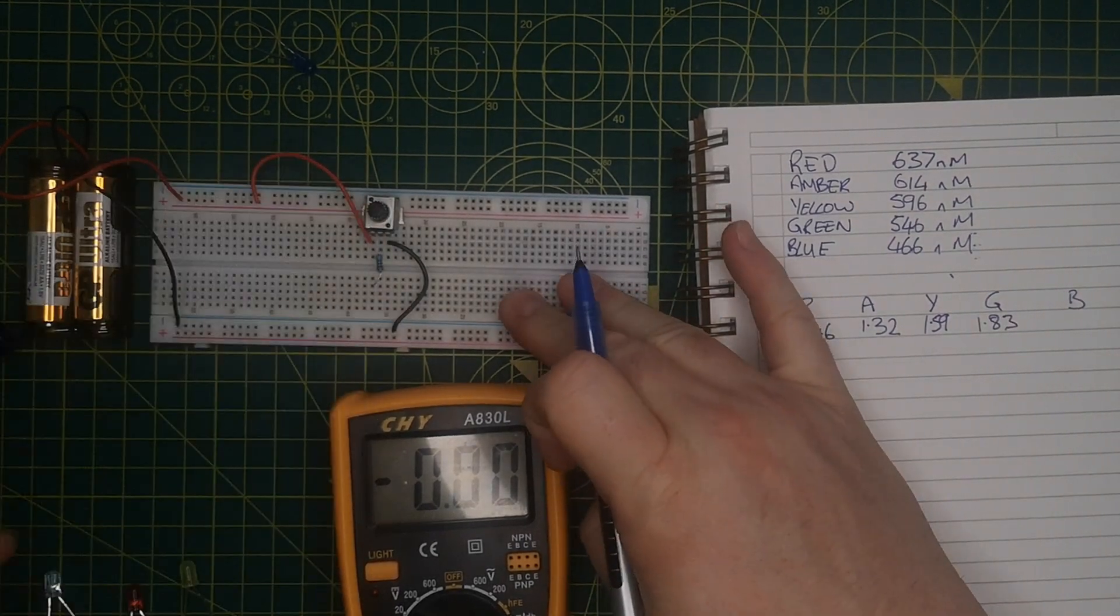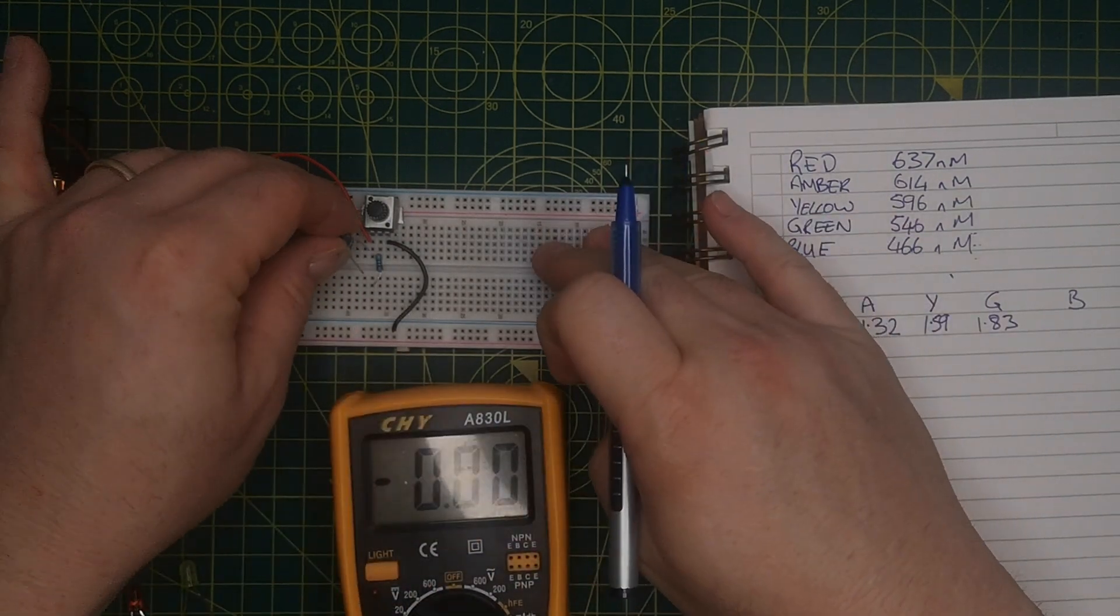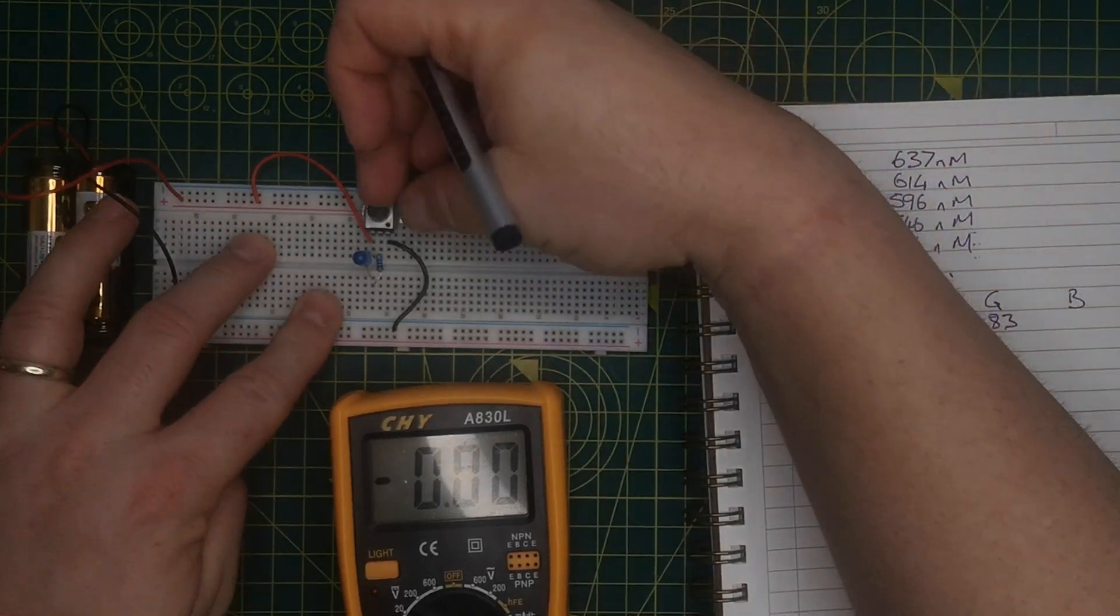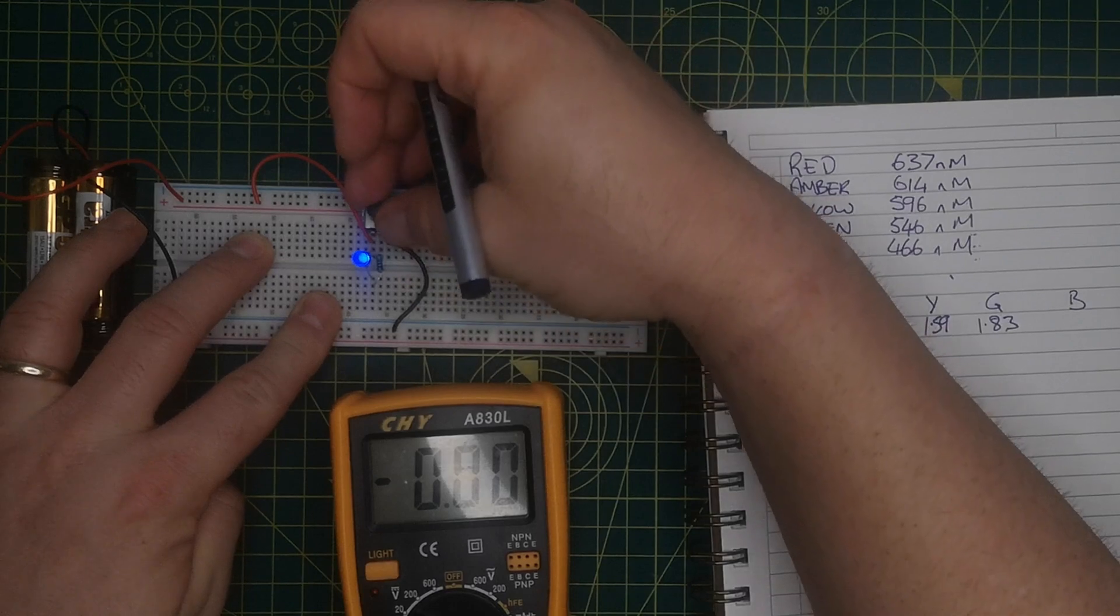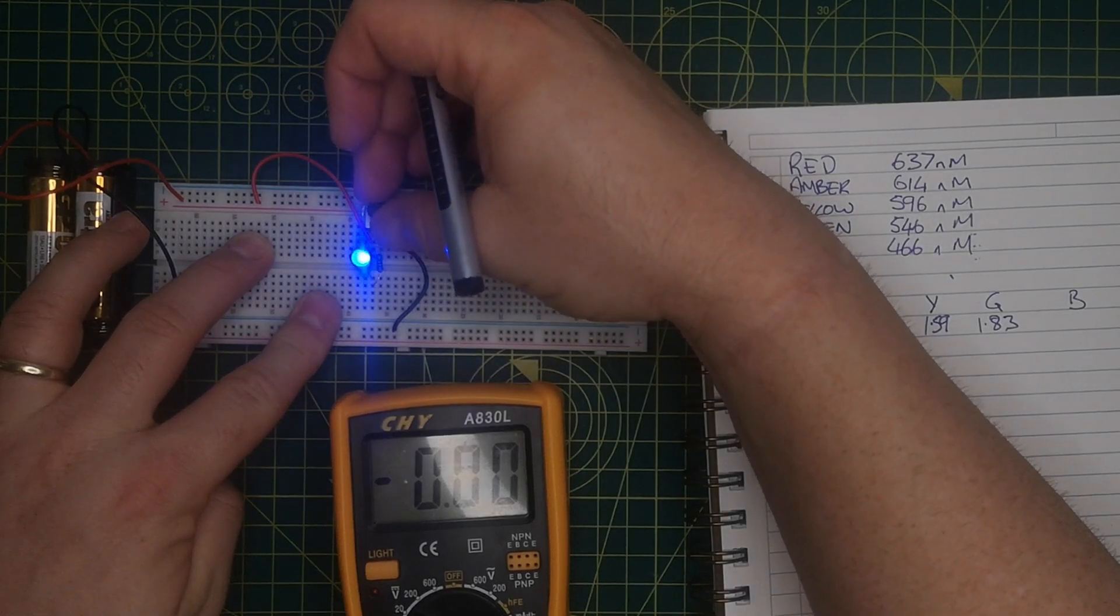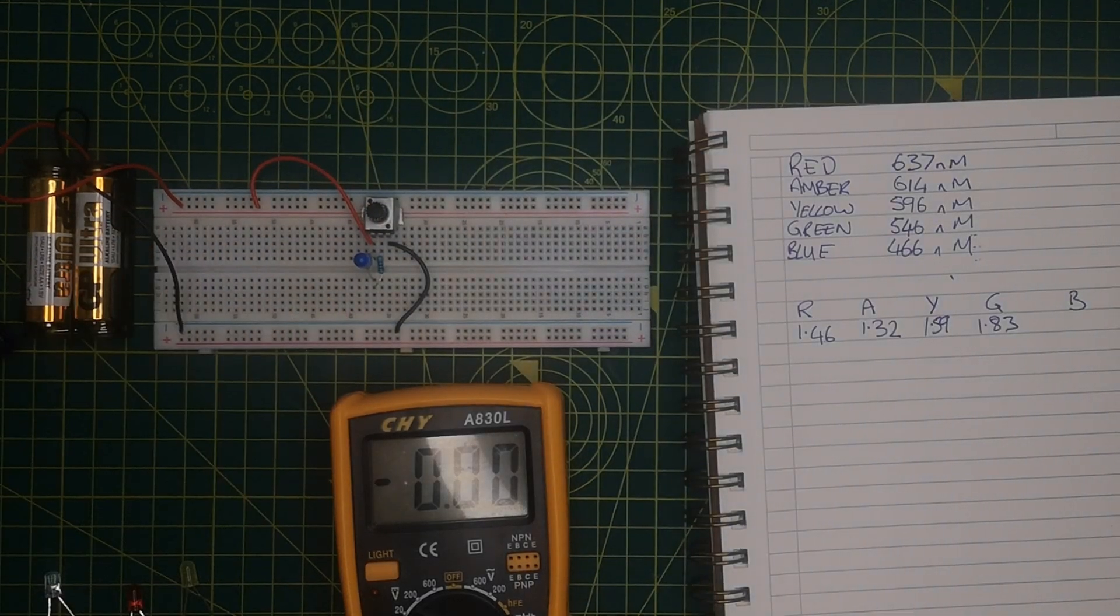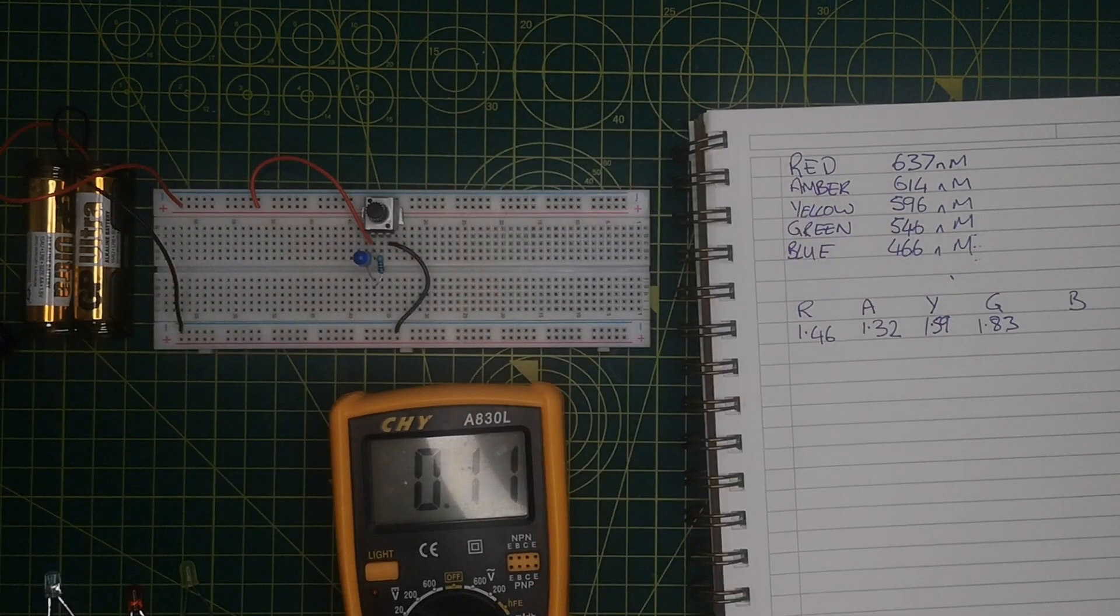And I'm now going to measure the blue one. Again, get the long leg the right way around. Pop him in. And adjust the variable until the LED lights. There we see it's lit, very bright. I'm going to reduce it until it goes out, which is about there. And we're going to measure the voltage across this LED, which is 2.31.